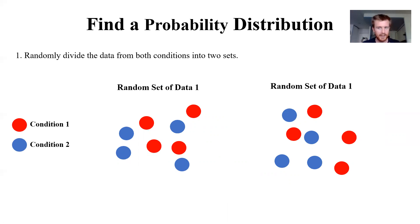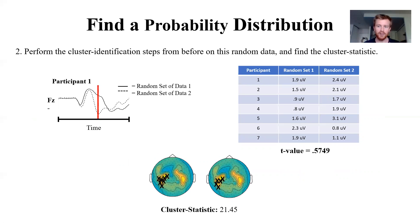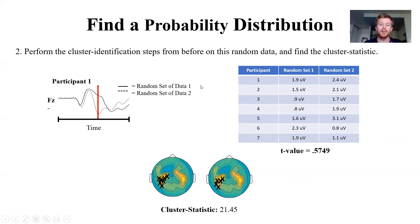We use permutation testing to get a distribution of cluster sizes that might occur by chance, and then use that distribution to determine whether a cluster found in our real data is significant. We randomly divide the data from both conditions into two sets, so that each set now has a mix of condition one and condition two. We then apply the exact same cluster identification process to this shuffled data — computing t-values at each channel-time pair, identifying clusters, and measuring their sizes.